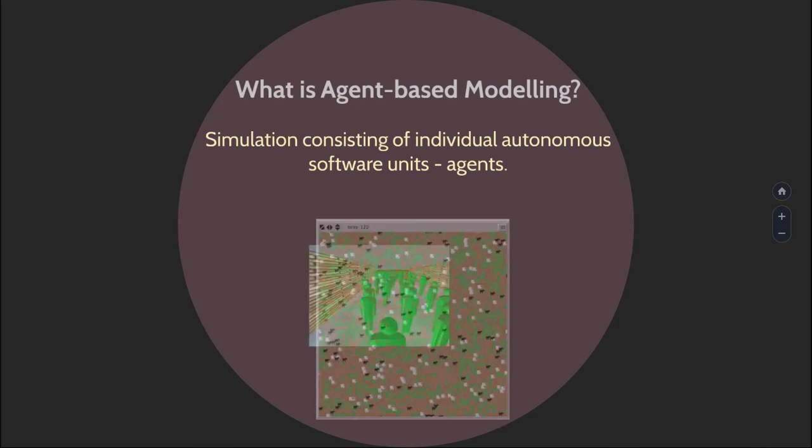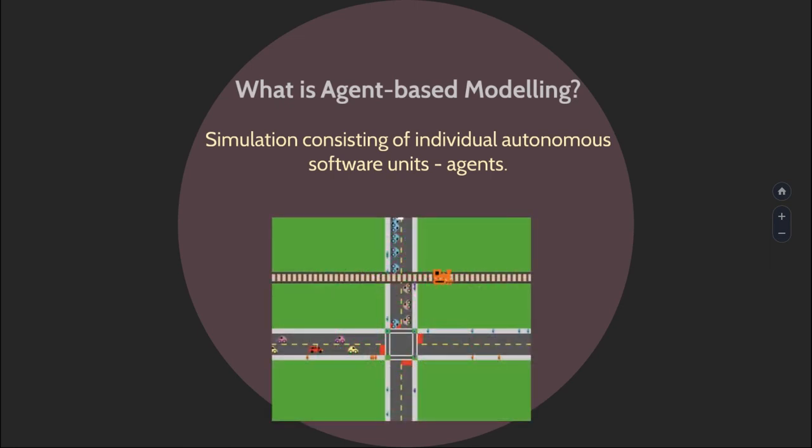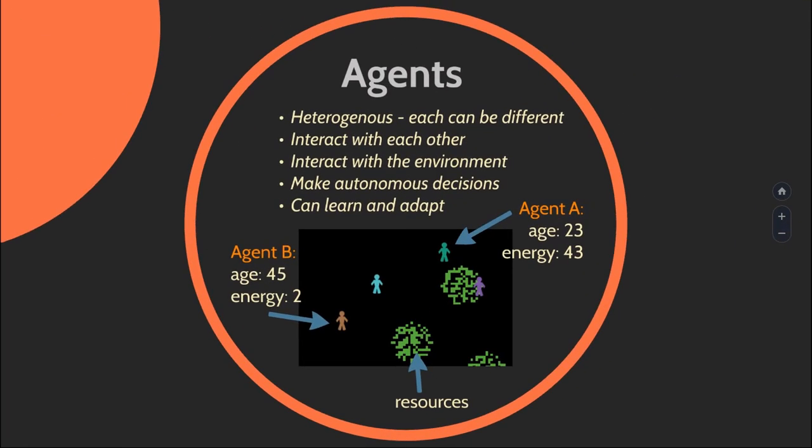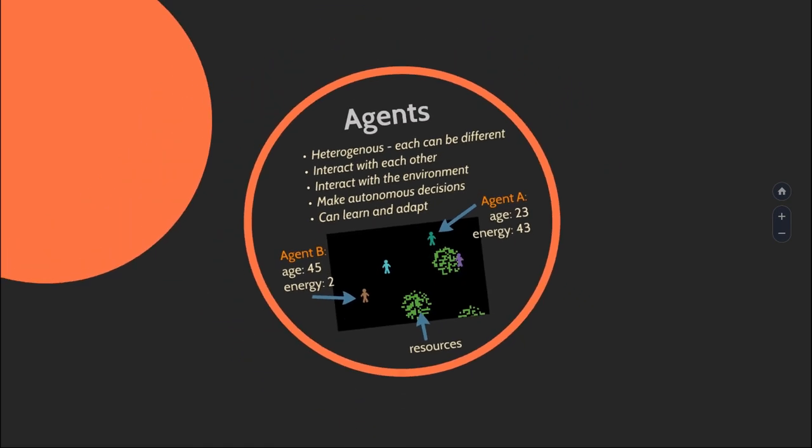Agent-based modeling uses tiny software units—agents. They can be people, they can be sheep, they can be cars, they can be anything you want. The thing is they're all heterogeneous, so every single one can be different. They can have different age, different gender, different energy value, different culture—whatever you want. They interact with each other and with their environment, and they make autonomous decisions. So the purple agent may decide, "I'm gonna stay here and sit on my patch of food and eat it," whereas the blue agent is probably just looking for some food. Every single one can behave in the way that is best for them at that particular time, and they learn and adapt if you're a good coder.